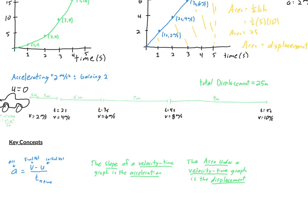Let's summarize three key concepts. First, the equation for acceleration: a equals (V minus U) divided by T, where V is final velocity and U is initial velocity. Second, the slope of a velocity-time graph is the acceleration. Third, the area under a velocity-time graph is the object's displacement.